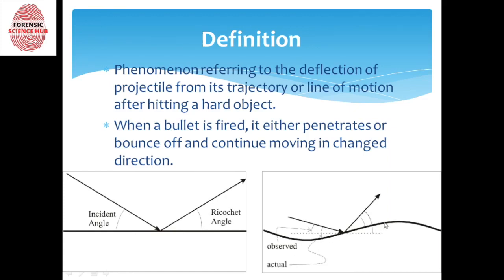Here we can see the same thing. The only difference is that the surface here is a plain smooth surface, whereas in the other case we have an irregular or bouncy surface.